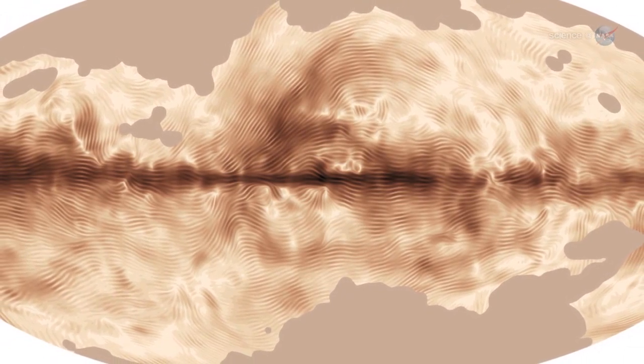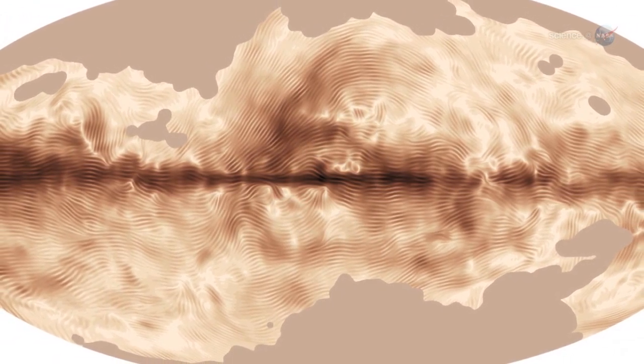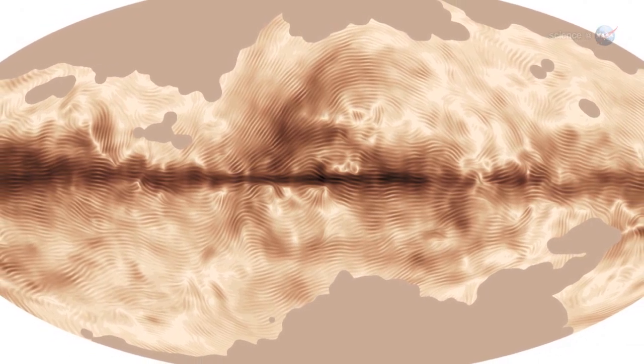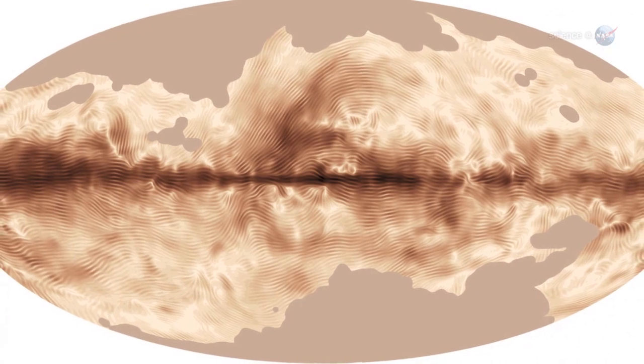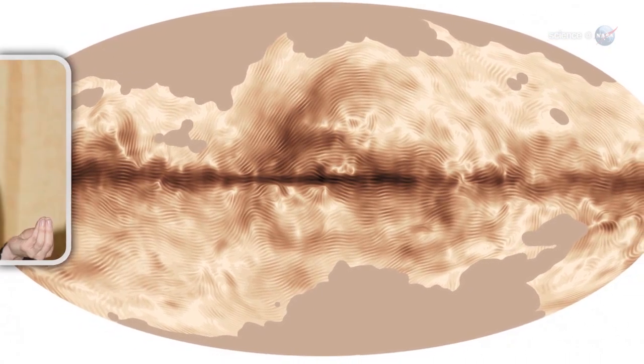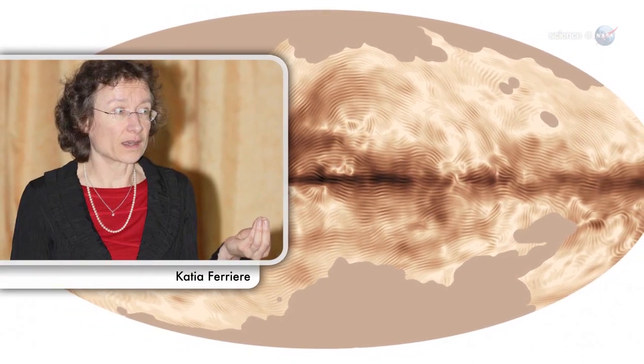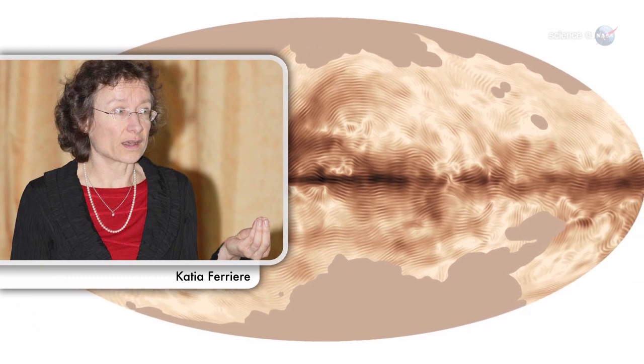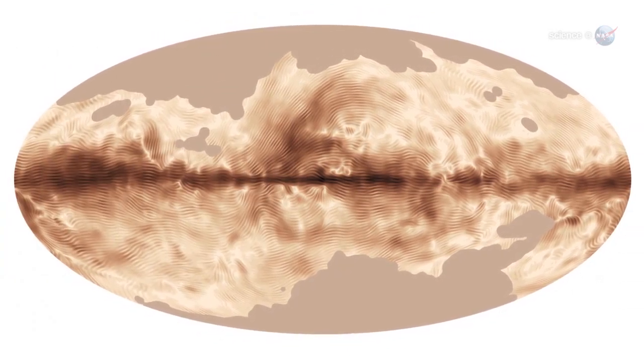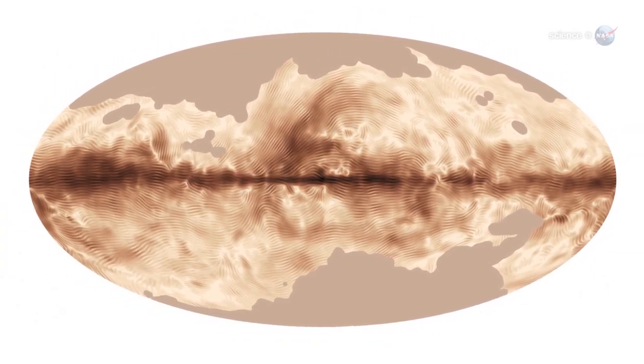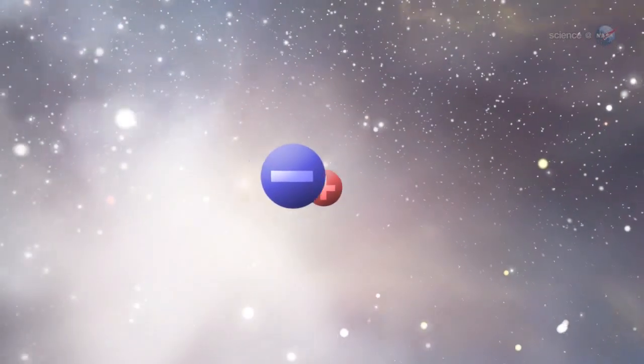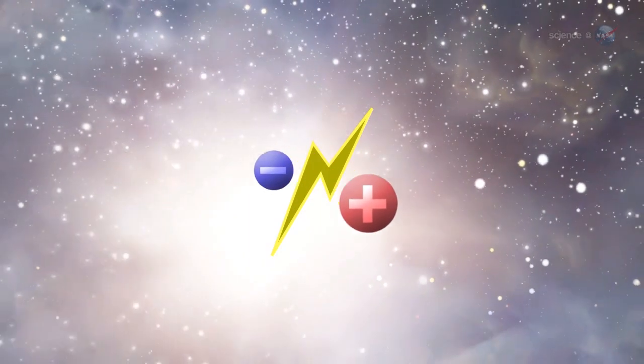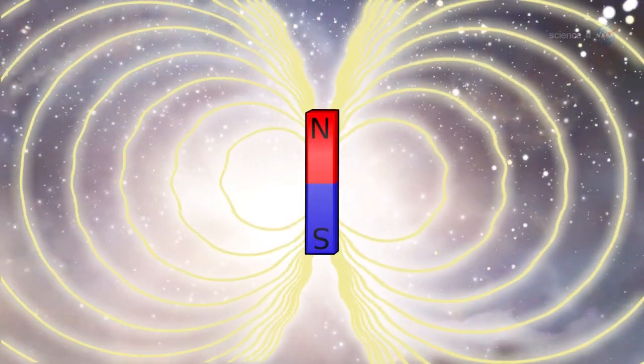The Planck map, which resembles a giant fingerprint, is proof of a galactic dynamo at work. This dynamo operates in the interstellar medium that pervades our galaxy, says Katia Ferriere, a member of the Planck science team at the Institut de Recherche en Astrophysique et Planetologie in Toulouse, France. The motions of the interstellar gas, which is an electric conductor, generate electric currents, which in turn generate magnetic fields.